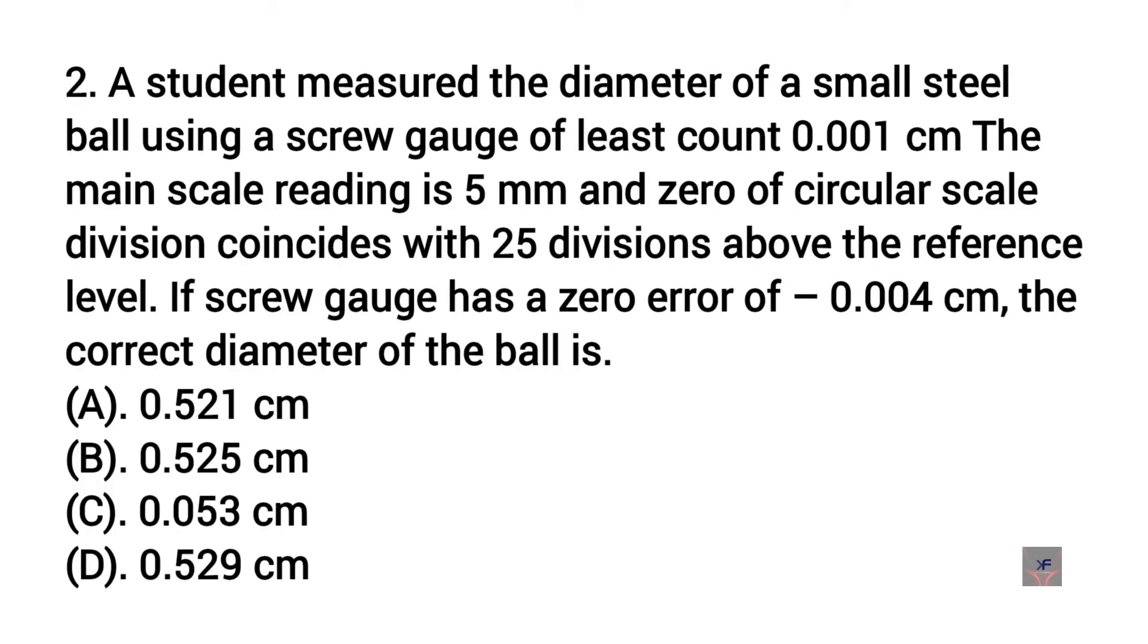Now let's go to the second question. A student measured the diameter of a small steel ball using a screw gauge of least count 0.001 centimeter. The main scale reading is 5 millimeters and zero of circular scale division coincides with 25 divisions above the reference level. If screw gauge has a zero error of negative 0.004 centimeter, the correct diameter of the ball is A. 0.521 centimeter